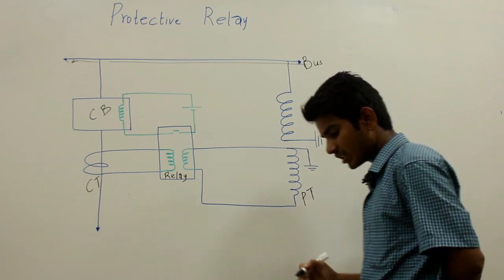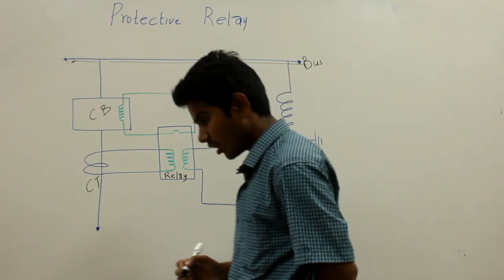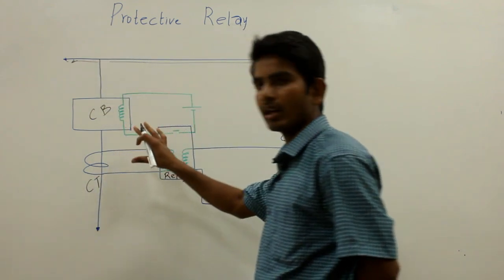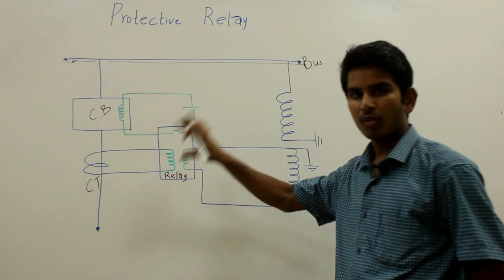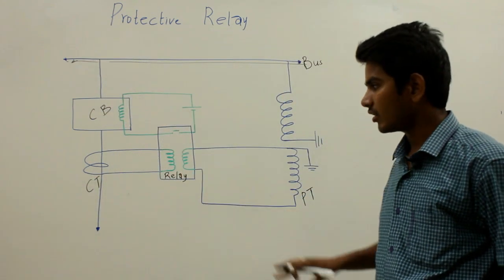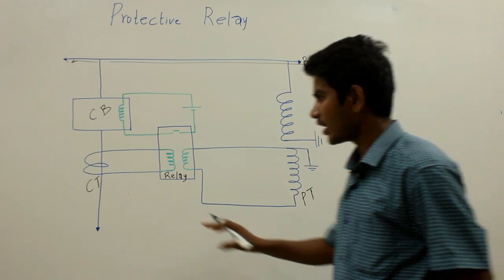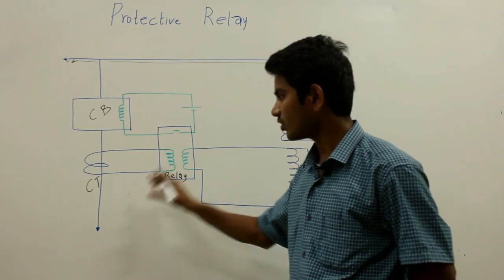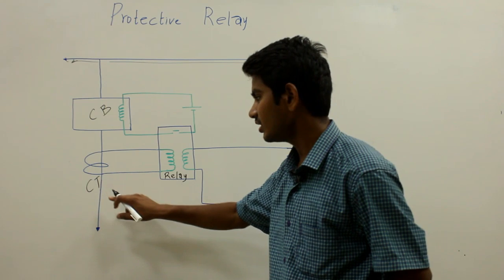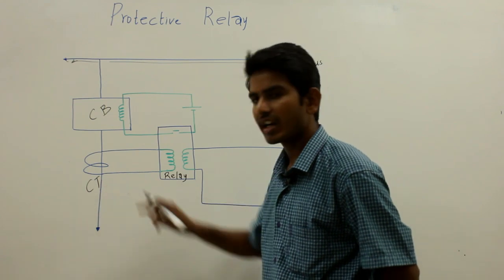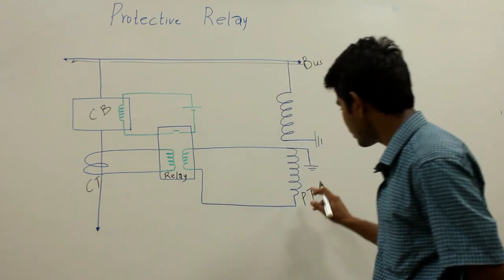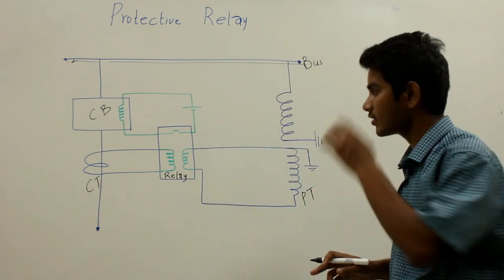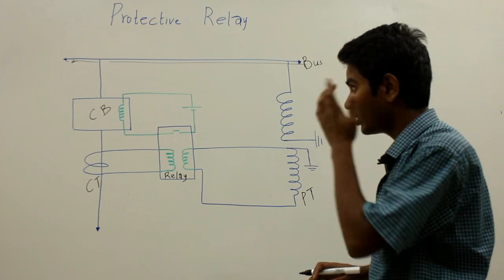The normal measuring instruments are not able to measure the high power system voltage and current. So in order to measure the high values of voltage and current of the power system, we are using the current transformer and the potential transformer, or you can say the voltage transformer.